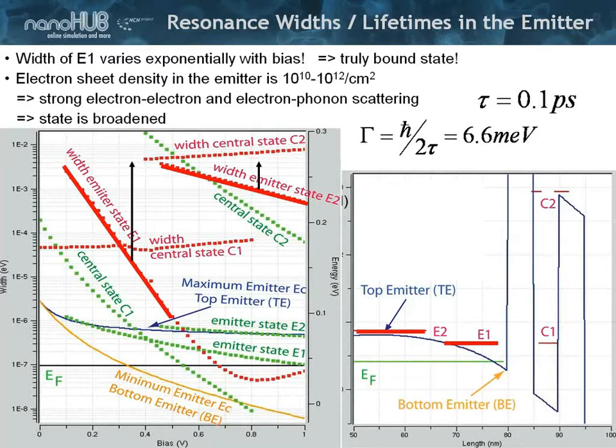So we're under-predicting, so to speak, this resonance width. That means we're under-predicting the current by a lot, by orders of magnitude. So we have to find a solution for that.